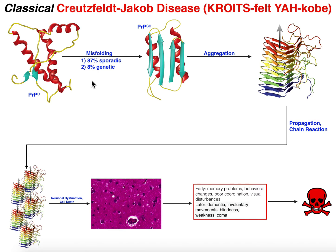The initial misfolding is only contributed 8% from genetics. Most cases are actually sporadic misfolding. In the classical form of this disease, misfolding normally occurs later in life with a mean age of approximately 60 to 65. Only 8% of these misfoldings are due to genetic mutations or polymorphisms.